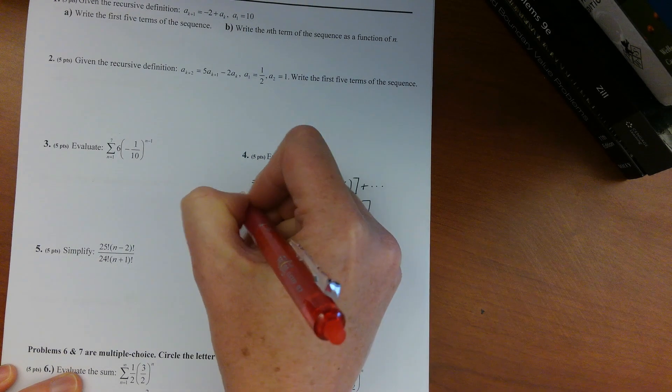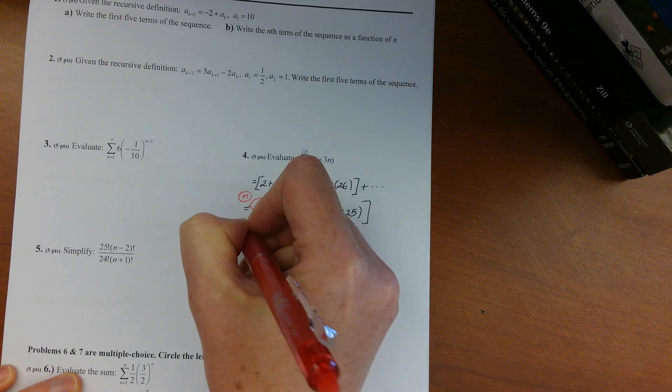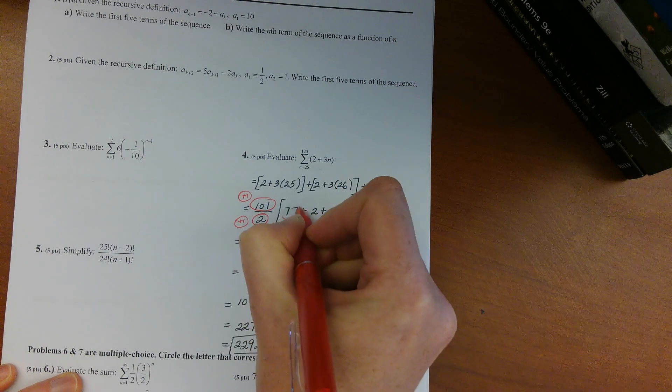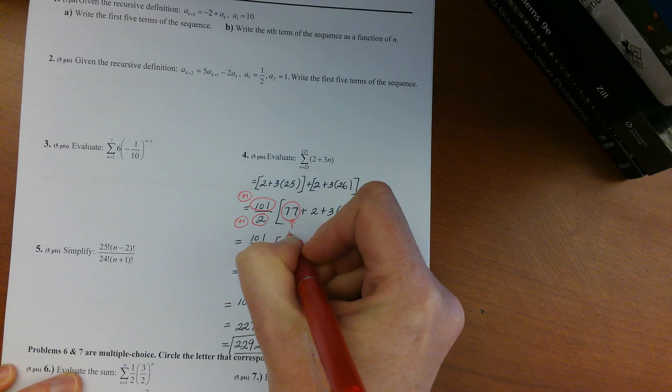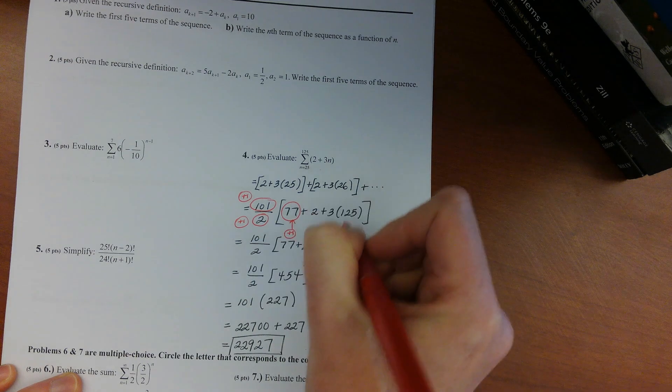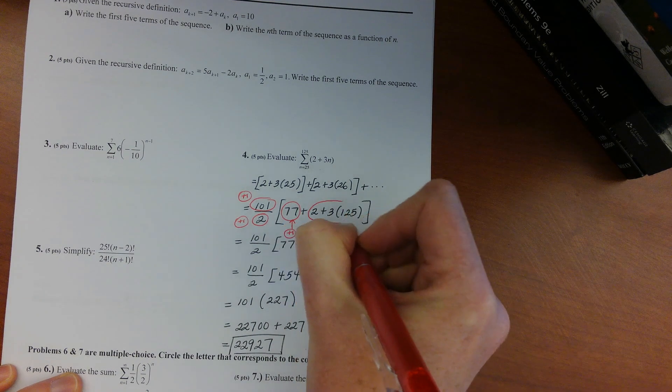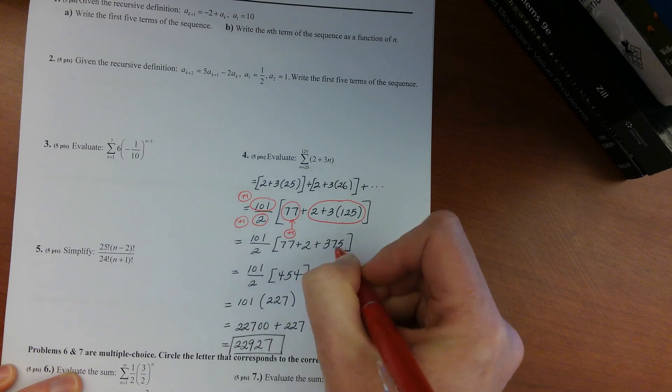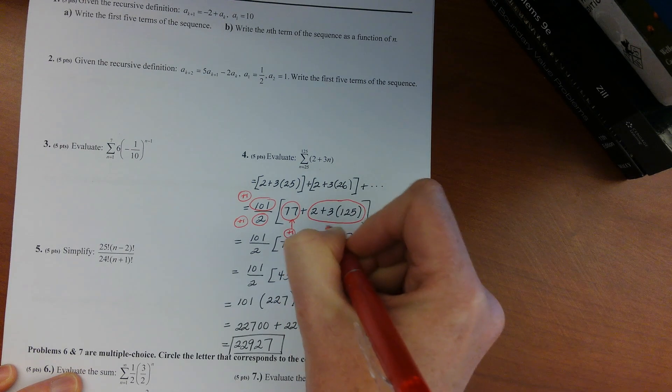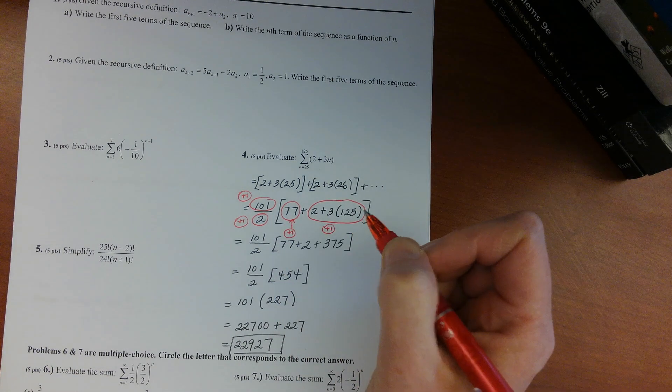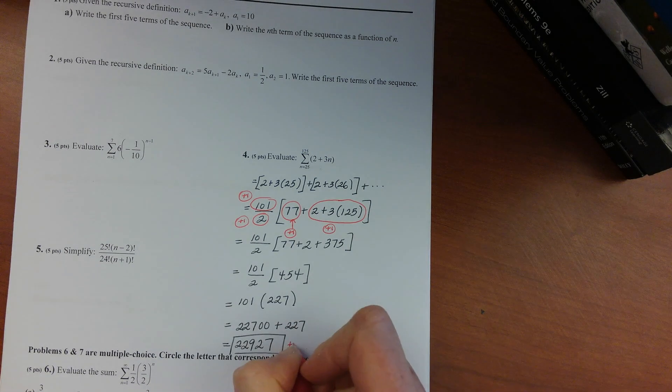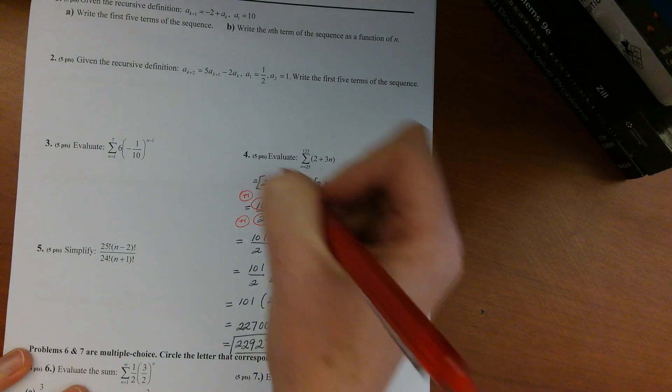So one point for figuring out that you had 101 terms, one point for knowing that you had to divide by two, one point for getting 77 for the first term in your formula, and one point for getting basically 377 for your last term. Okay, so that's four points, and then the little fifth point would just be for getting the final answer right.